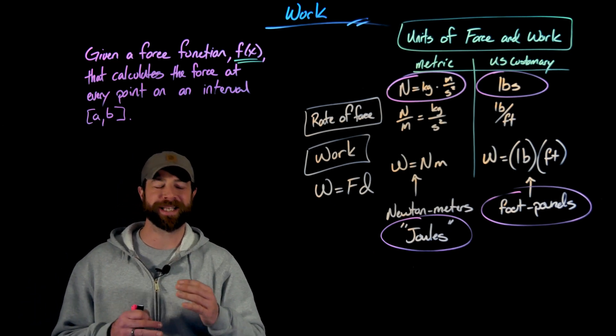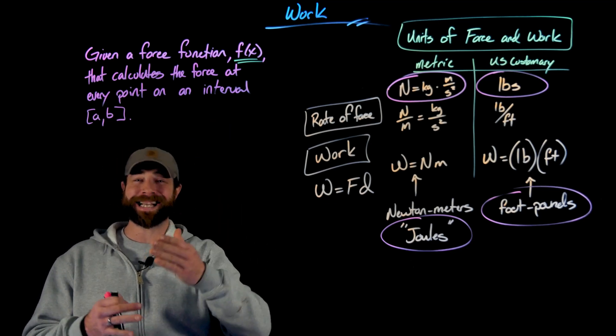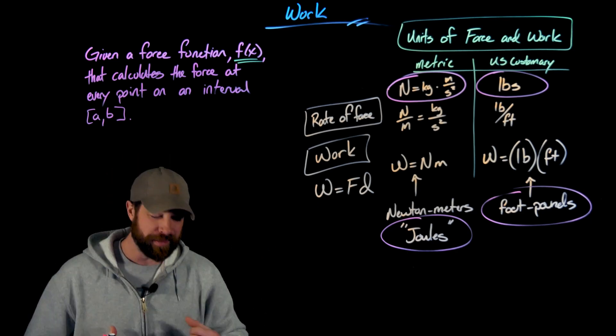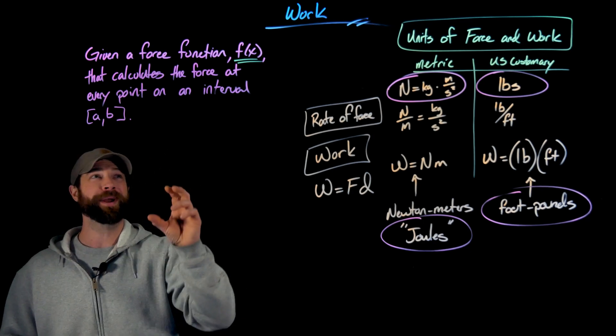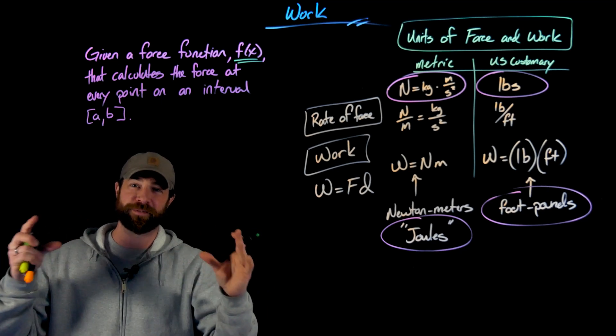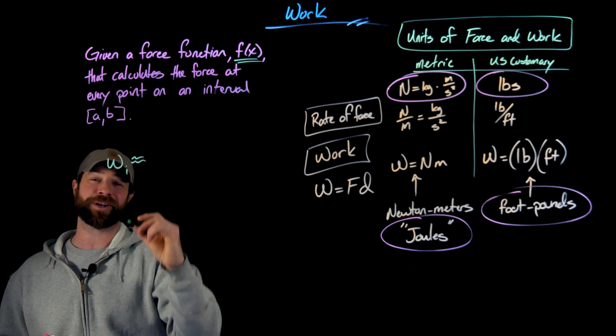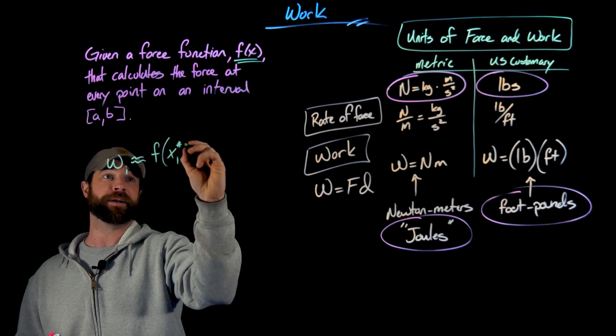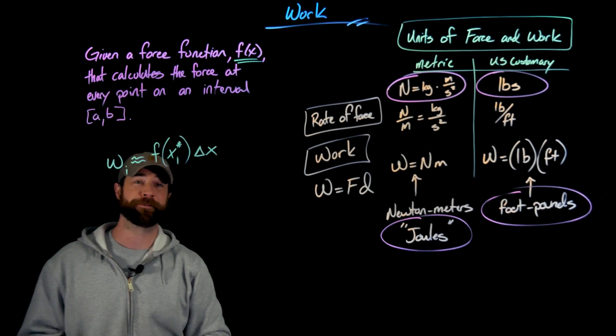So if we have this force function, just to give some context, if you go back to that newspaper example I was talking about a second ago, let's say x is how many houses this kid has already visited. You could plug in 10, and it would output the amount of weight or force on this kid as they bike to the next house. So if we have a function that does that over a certain interval, we break this interval into n subintervals like we always do. We can find or approximate the work on any of those given subintervals by applying this force function to any sample points on that interval and then multiplying it by the length of that interval.